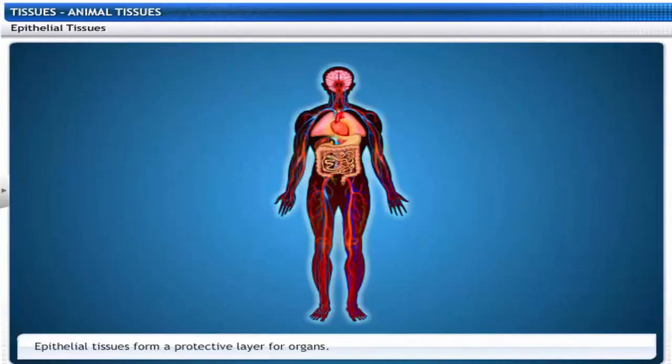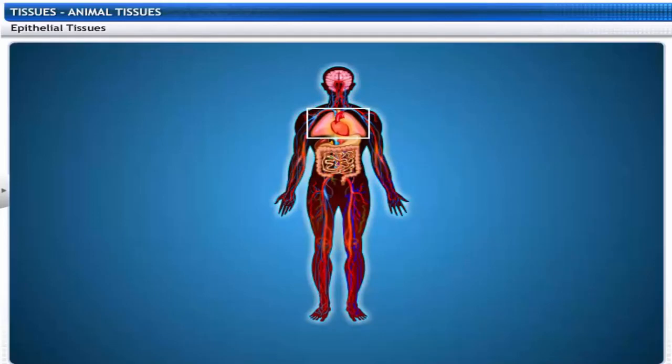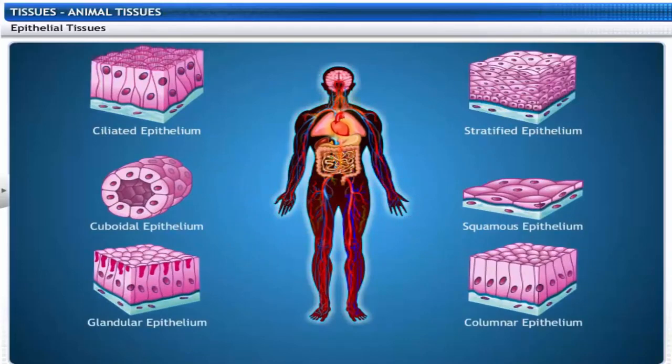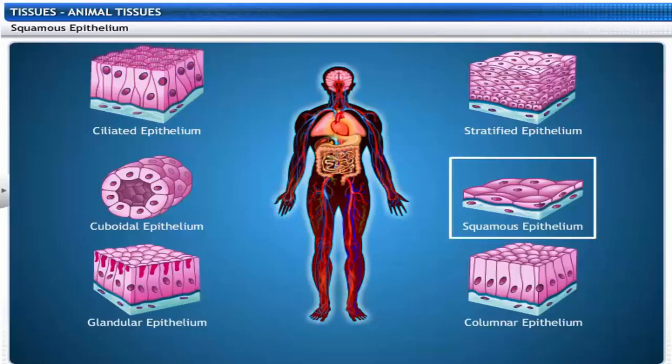Epithelial tissues form a protective layer for organs. They act as a barrier to keep the different body systems separate. Epithelial tissues are of different types depending on their shape and function. Let's first look at squamous epithelium.